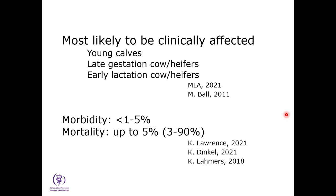Morbidity estimates from New Zealand, Australia, and the United States are one to five percent. Mortality up to five percent is the number commonly cited, though some reports mention 80 to 90 percent. I want to warn that the 90% figure came from a herd of only eight animals. So thinking about it realistically, morbidity could be around five percent and mortality up to five percent — those are a couple of fairly reasonable numbers.